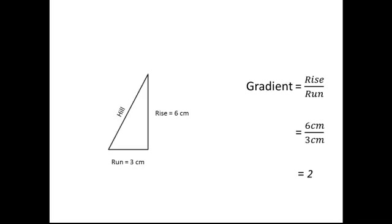Let's look at another example. This time using a triangle as a simplified version of a hill. We again need to measure the distance of the vertical rise and the horizontal run. We then substitute these values into the equation for rise over run, which gives us 6 divided by 3, which equals 2. Therefore, the gradient of this hill is 2.